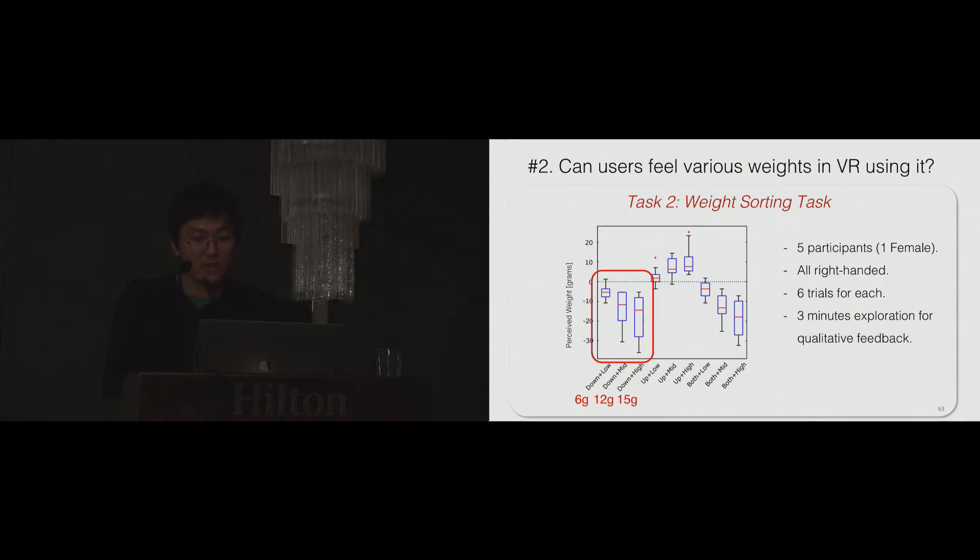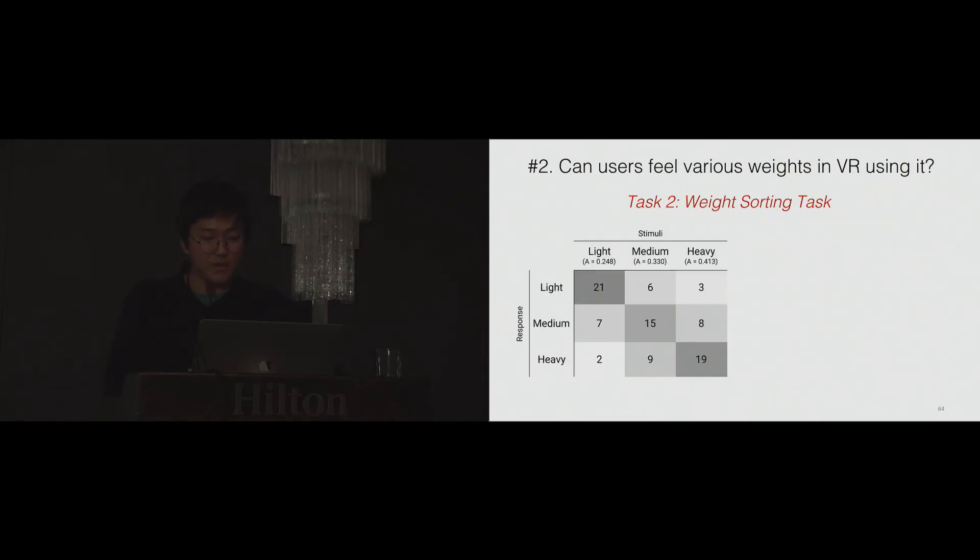After the weight sorting task, they used the device for three minutes for qualitative feedback. This confusion matrix shows the result. Users responded correctly with 60% chance. There was some confusion. Especially users were confused between medium and heavy weights. These gave a similar trend compared to the task one result. The medium and heavy weight were too close, so that it was almost the border of the just noticeable difference.